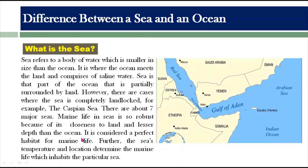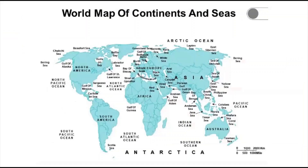Marine life in seas is more robust because of the sea's closeness to the land and its lesser depth compared to the ocean. The marine life is more advanced and has more robust growth in the seas. Seas are considered a perfect habitat for marine life. The temperature and location of a sea determine which marine species inhabit that particular sea.